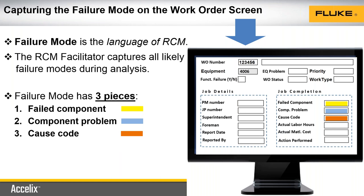The audience likely has a variety of CMMS products, so their work order screens would look differently. This is one example. You have a work order number with a description linked to an equipment record — perhaps you identify that a functional failure has occurred. But the fields of note are the yellow, blue, and orange. Those three pieces make up the failure mode. If your software does not have these fields, you might ask the system administrator if it's possible to configure your product.